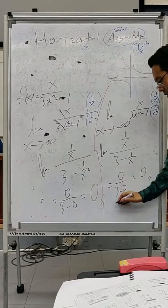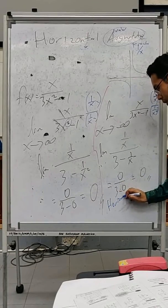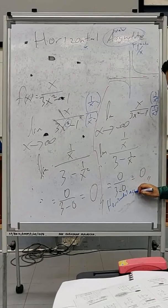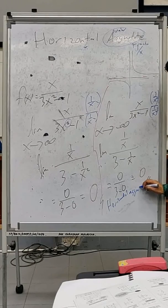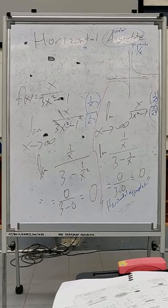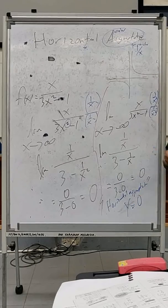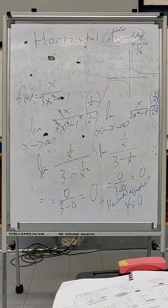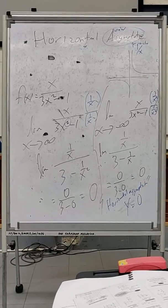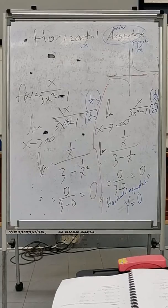You should state the horizontal asymptote. The horizontal asymptote is y equals 0 — not just '0'. If you just write down 0 you lose marks, so be very very careful. Let me try to find one more example.